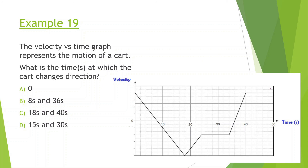The cart changes direction when it crosses zero velocity. It's going fast in the positive direction, slowing down to zero, then starts getting faster in the negative direction — it changed direction there. The same happens in reverse: fast in the negative direction, slows to zero, then starts moving in the positive direction. The cart changes direction at 8 seconds and 36 seconds — like someone walking, slowing down, turning around, and getting faster in the opposite direction.